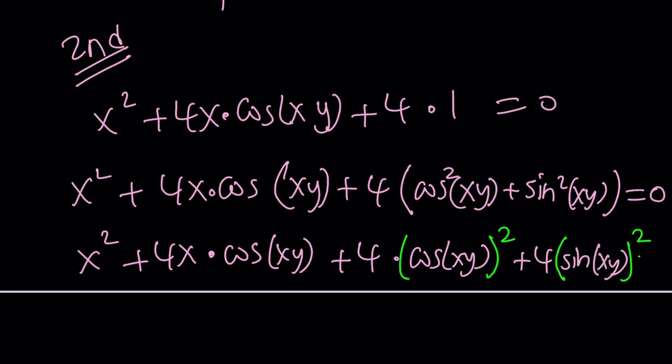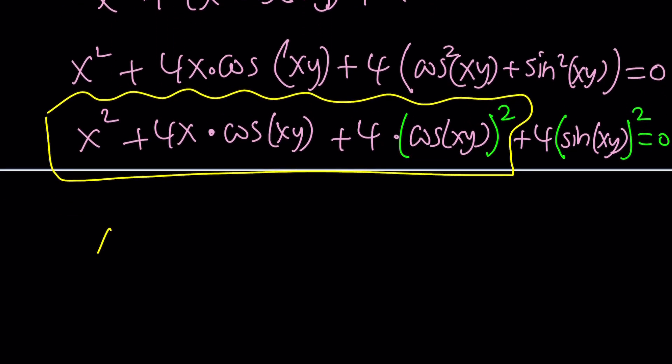And of course, the whole thing is equal to zero. Now take a look at this piece. This piece is actually a perfect square. Do you know why? Because it's x plus 2 cosine of xy quantity squared. Do you see what I'm talking about? I hope so.